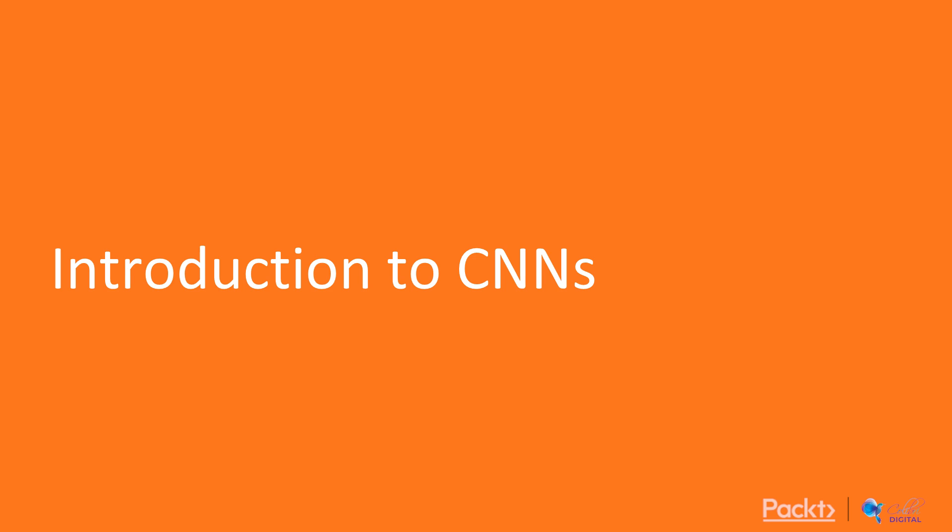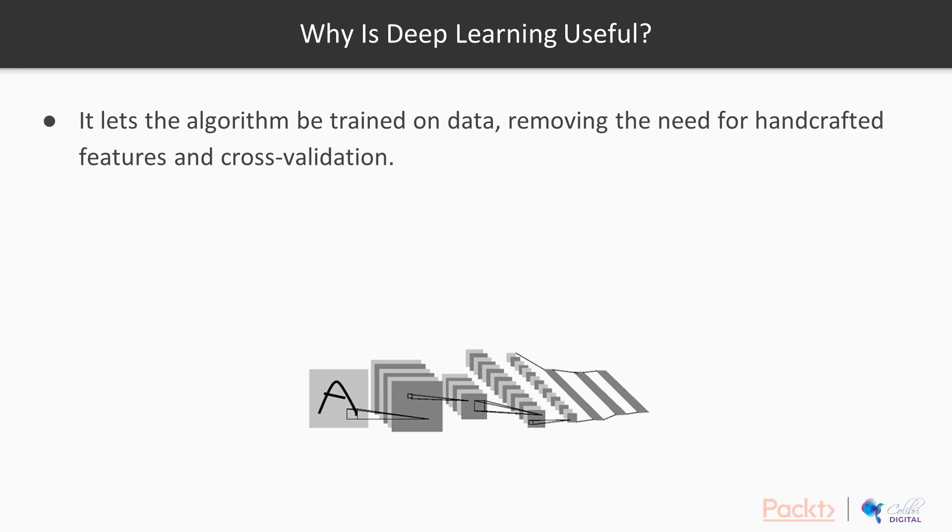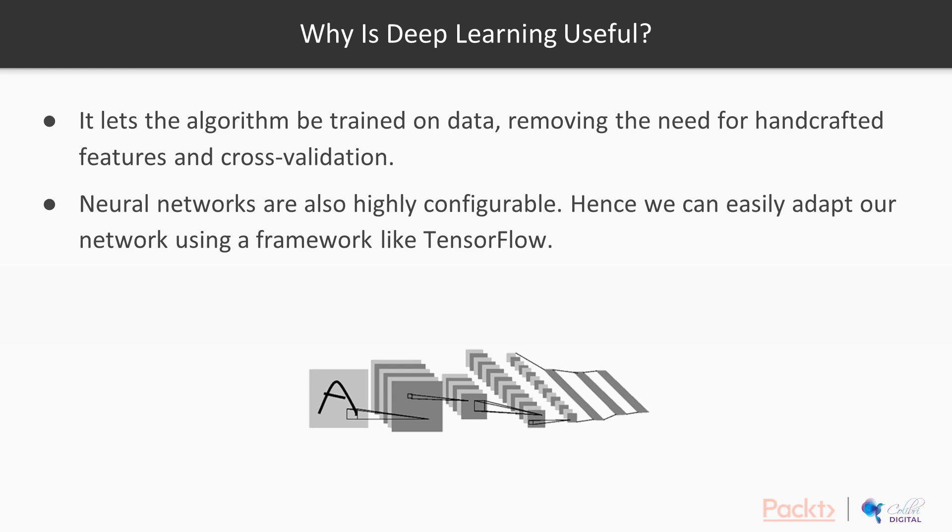So firstly, let's go to the first video. This is an introduction to CNNs. Just a little recap: why is deep learning useful? It effectively lets the algorithm be trained on the data. We can just let the algorithm train specifically on the data and we don't need to do any cross validation or feature tuning. They're also highly configurable and we can easily adapt our network using frameworks like TensorFlow.